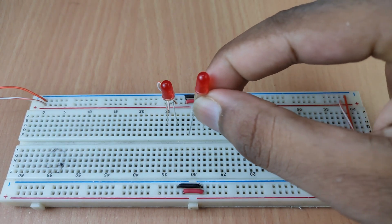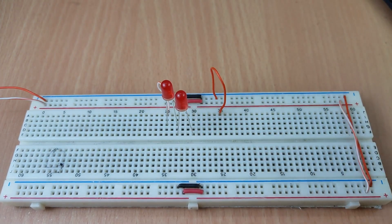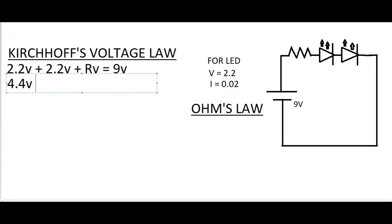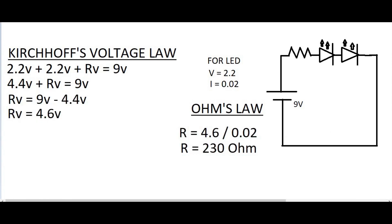The same calculations can be used for lighting two LEDs in series. Just by adding another 2.2V to the equation, we get the resistance value of 230 ohm.